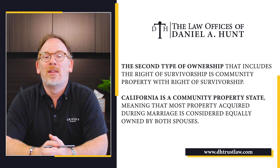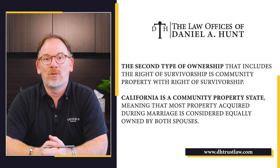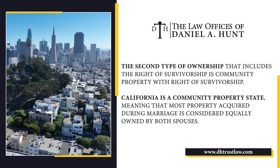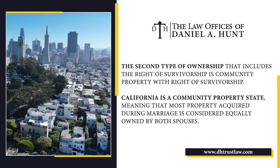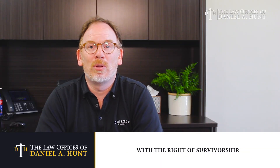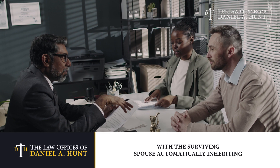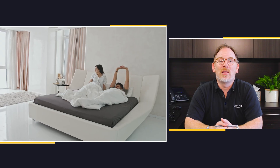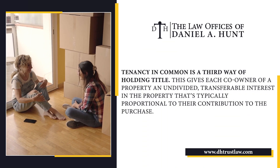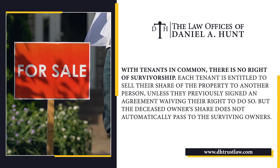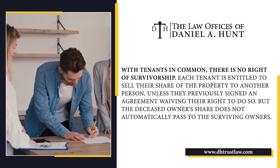The second type of ownership that includes the right of survivorship is community property with right of survivorship. California is a community property state, meaning that most property acquired during marriage is considered equally owned by both spouses. However, state law also allows couples to hold community property with the right of survivorship. This form of ownership operates similar to joint tenancy, with the surviving spouse automatically inheriting the deceased spouse's share upon death. For example, married couple Joe and Jane own a condo as community property with the right of survivorship. If Jane dies, Joe automatically becomes the sole owner of the condo without going through the probate process.